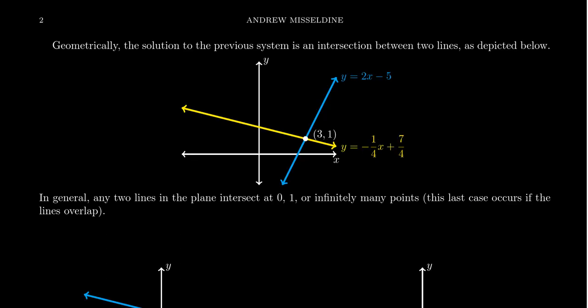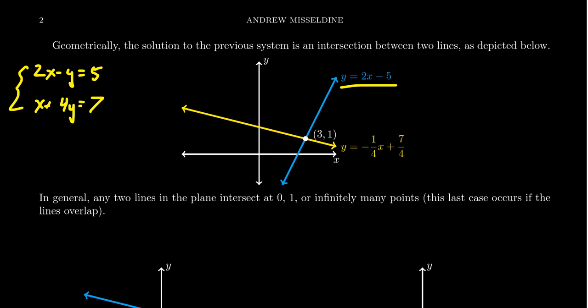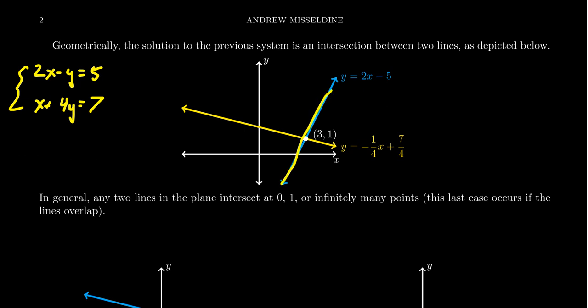We've demonstrated that (3, 1) is a solution, and in fact it's the only solution. There is a very nice geometric argument for this. Each linear equation with two variables represents a line. If I solve the first equation 2x minus y equals 5 for y, I move 2x to the other side to get negative y equals 5 minus 2x, then multiply by negative 1 to get y equals 2x minus 5. This is slope-intercept form — a line with y-intercept negative 5 and slope positive 2.